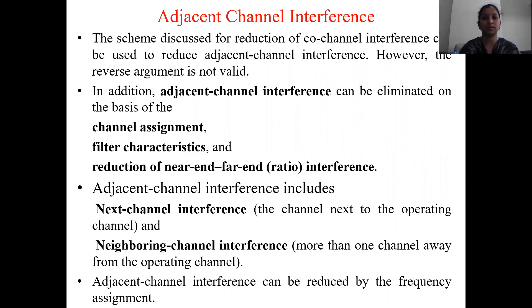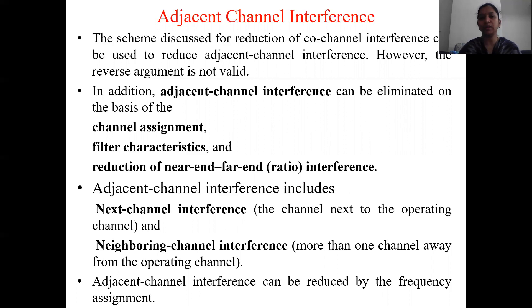First, coming to adjacent channel interference. The schemes discussed for reduction of co-channel interference can be used to reduce adjacent channel interference. However, the schemes used for adjacent channel interference cannot be used for co-channel interference — that is not valid. In addition, adjacent channel interference can be eliminated mainly on the basis of channel assignment — the way we assign the frequencies — which we will see briefly in the fourth unit, and also based on filter characteristics.